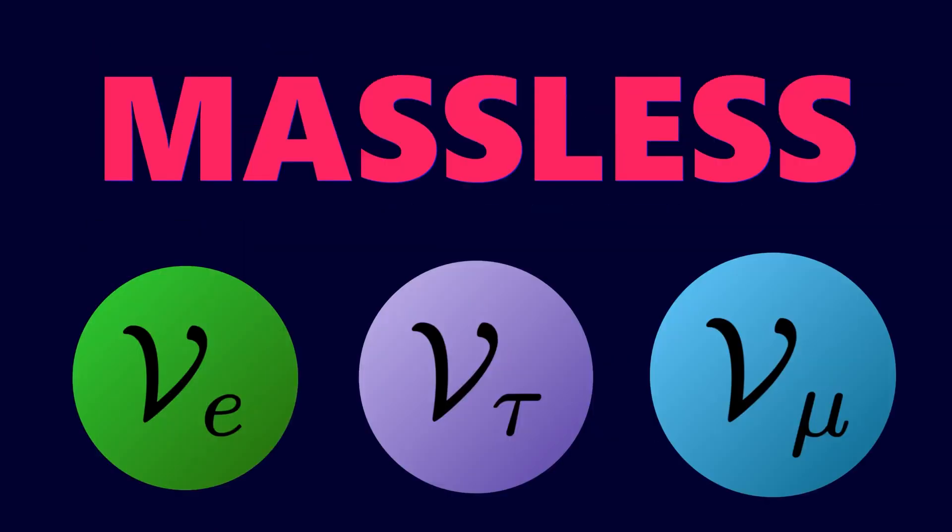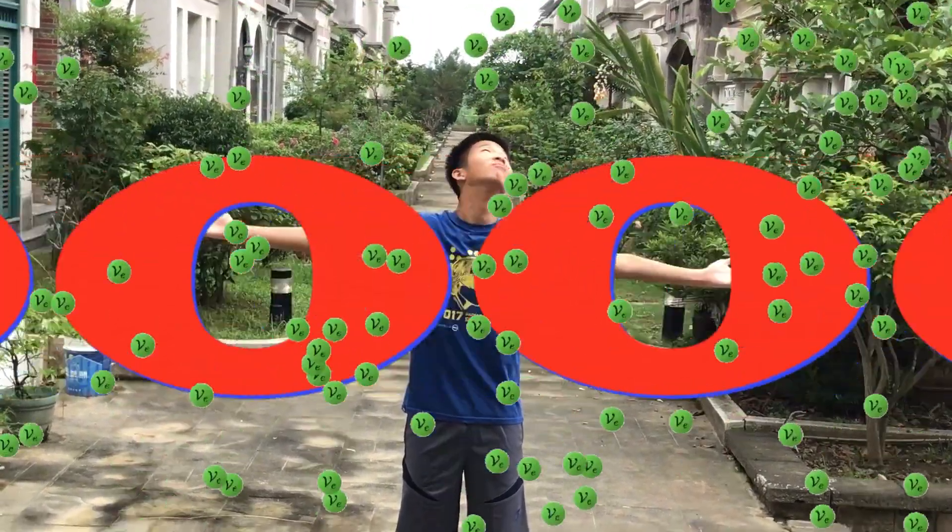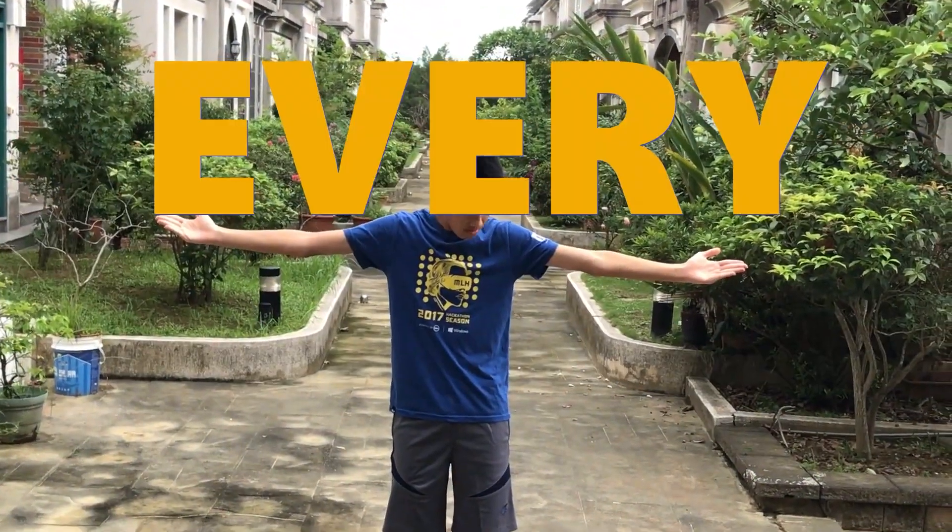Also, according to the standard model of particle physics, they do not have mass. In fact, they are so tiny that trillions of them pass through our body every second.